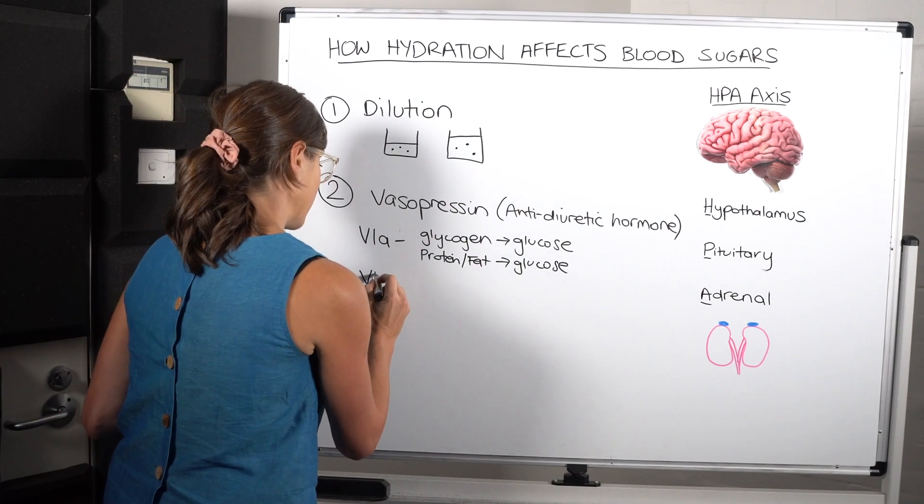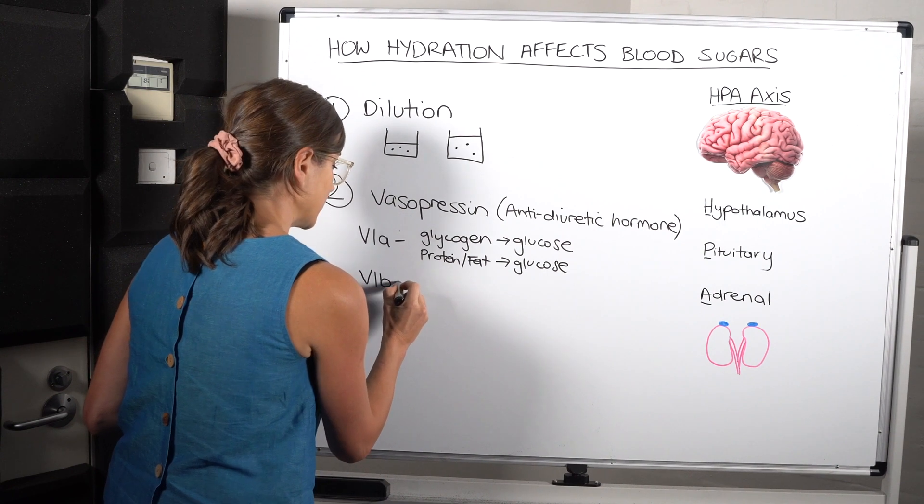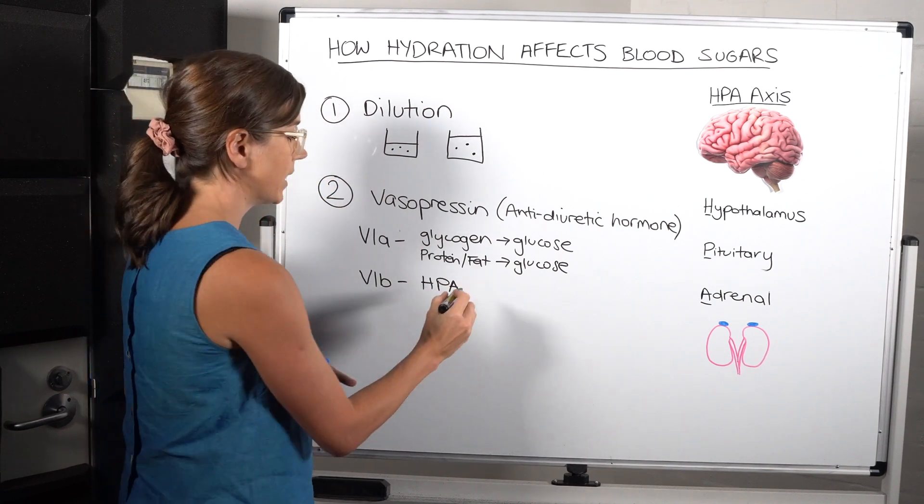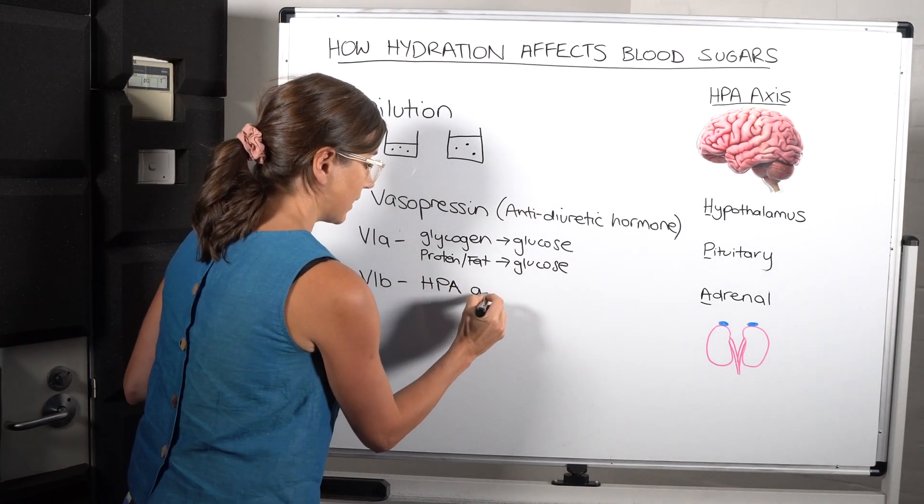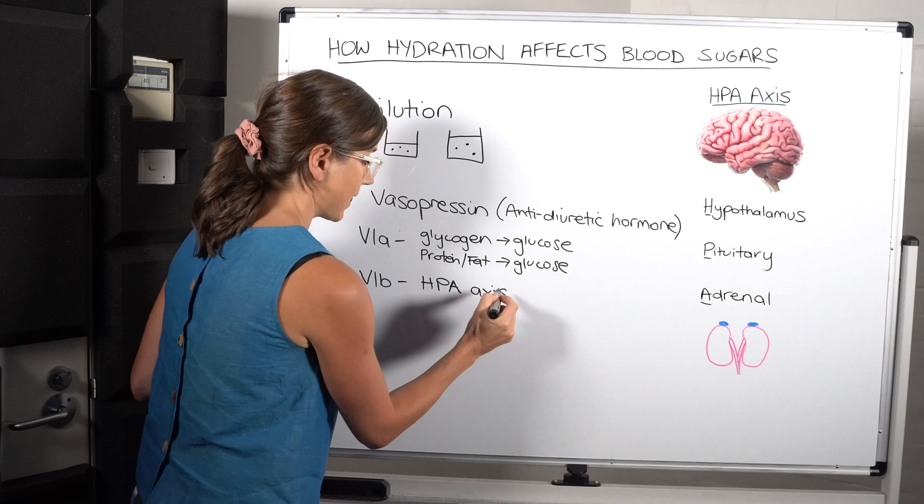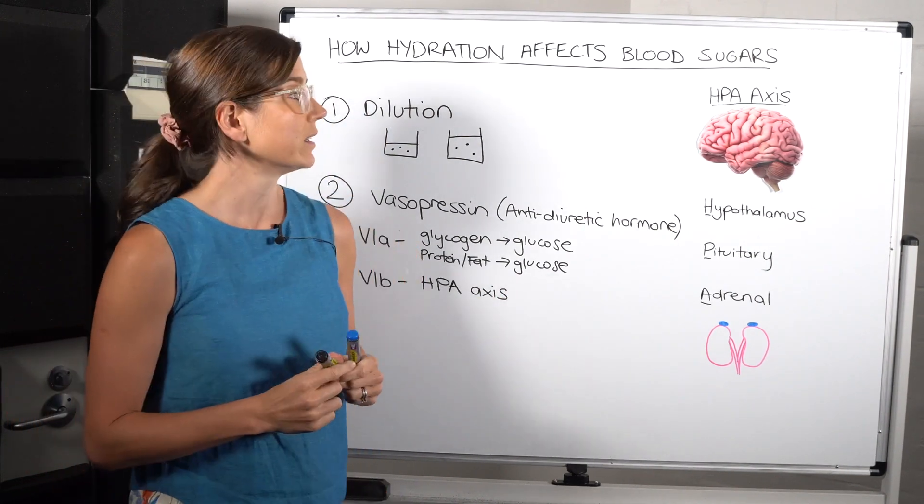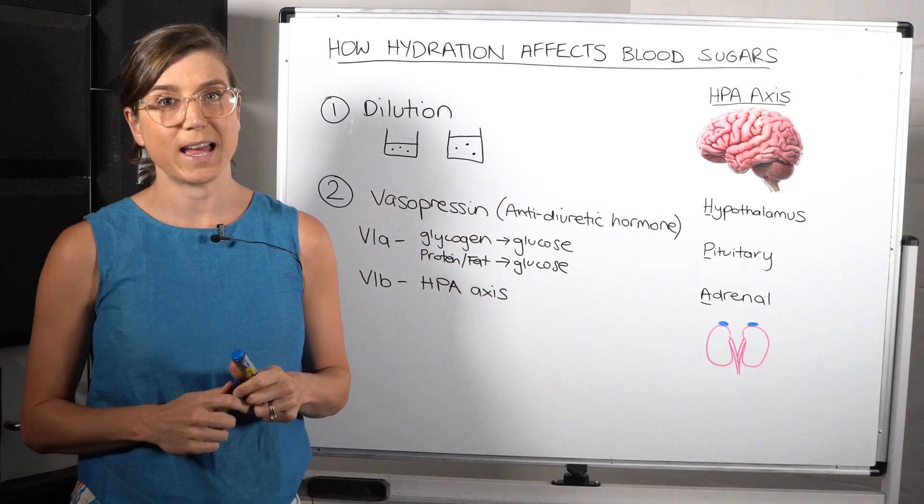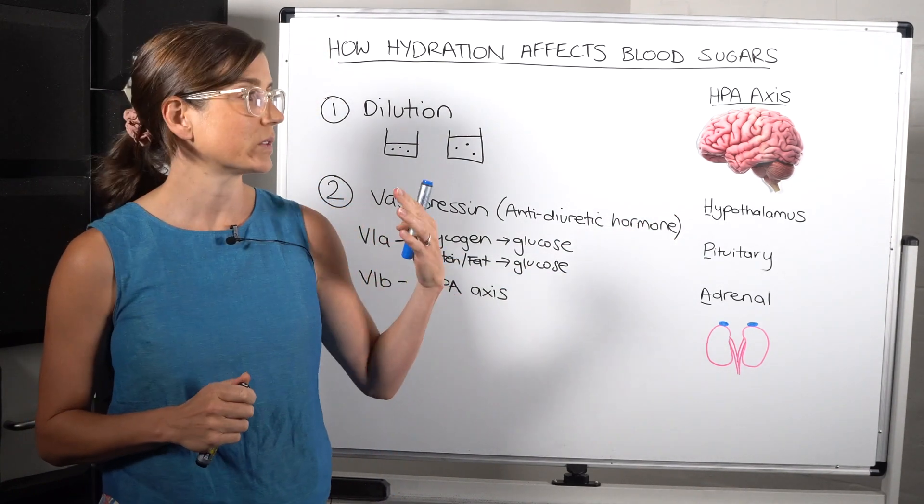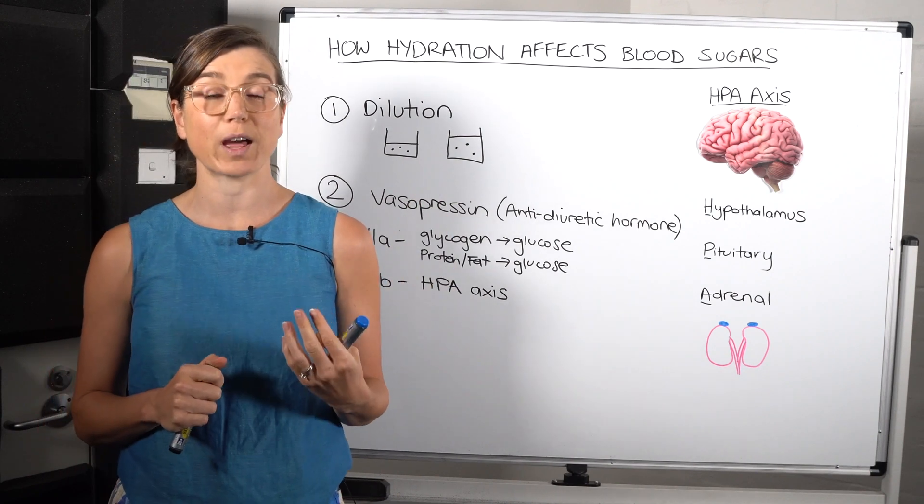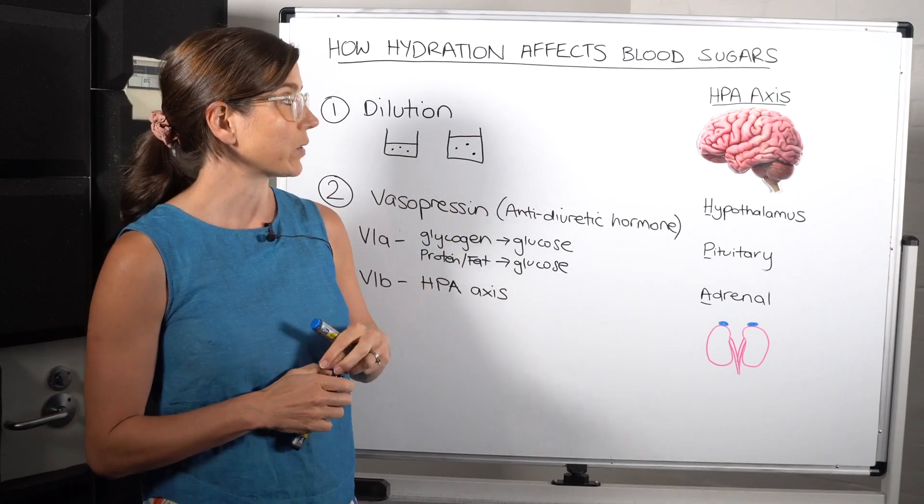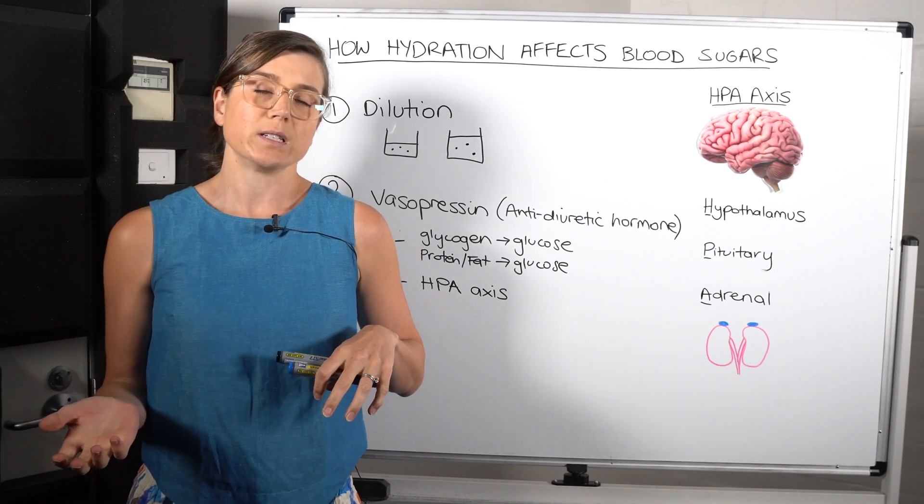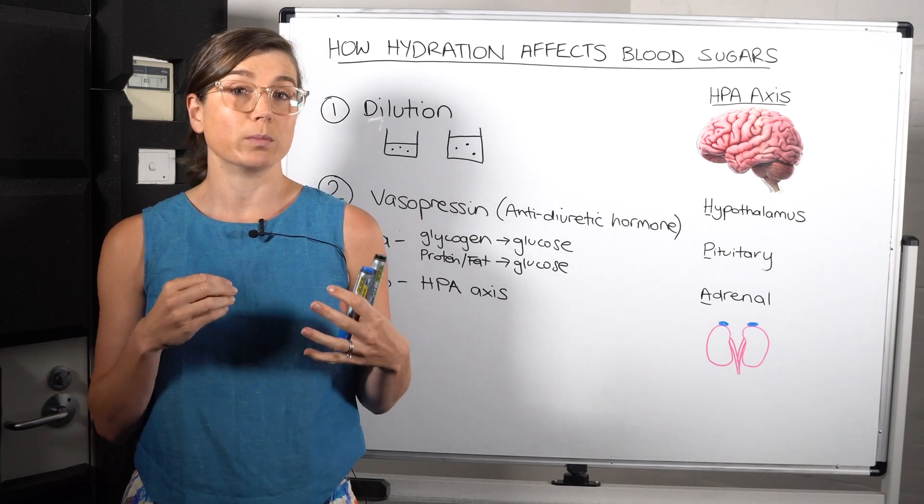Then there is a V1B receptor. And at the V1B receptor, when this is stimulated, it stimulates the HPA axis. So what is the HPA axis? The HPA axis is the hypothalamic pituitary adrenal axis. And this is also known as the sort of stress response. So that fight or flight response in the body. And that is when the HPA axis is stimulated. So being dehydrated is a mild form of stress.